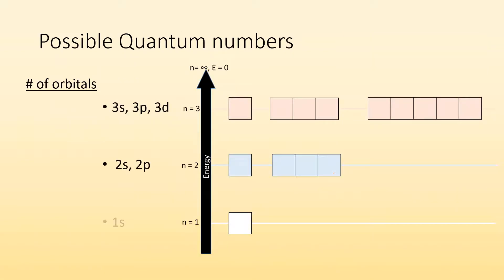So possible quantum numbers. Let's take a look. So in terms of energy, the first energy level is the lowest. This is going to be the S subshell. So the quantum numbers for this would be 1, 0. And how many orbitals are in this first energy level? There's just one orbital. There's one box. That's what this box is showing. In the second energy level, there's two sublevels. We have the S and we have the P sublevel. So how many orbitals are there in this one? There's four. And you can just count them here. We got the S, we have the P, and we have the D sublevels.